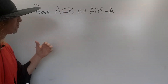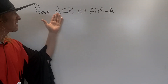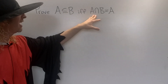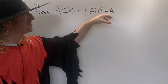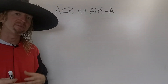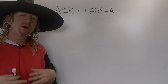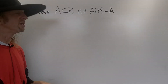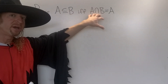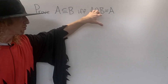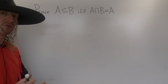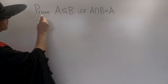In this problem we're going to prove that A is a subset of B if and only if A intersection B is equal to A. To prove an if-and-only-if statement in mathematics, one way to do it is: assume the left side is true and show the right side is true, then assume the right side is true and show the left side is true. That's how we'll do it.